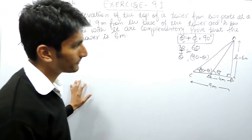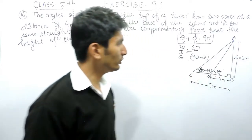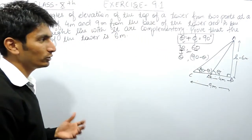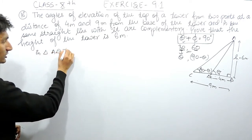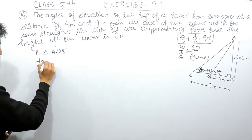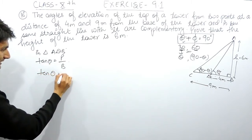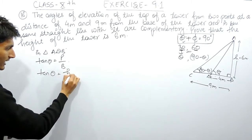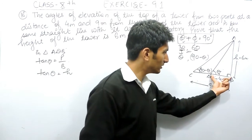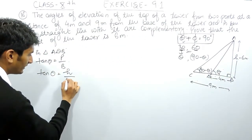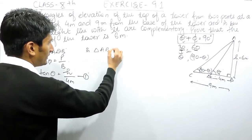We have two triangles: the first is triangle ABC (the bigger one) and the second is triangle ADC. We use the tan ratio in both triangles. In the first triangle ADB (the smaller one), tan theta equals perpendicular upon base. The perpendicular is h, and the base for this triangle is 4 meters, so tan theta equals h upon 4. This is our first equation.